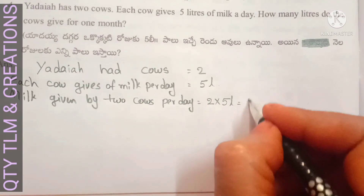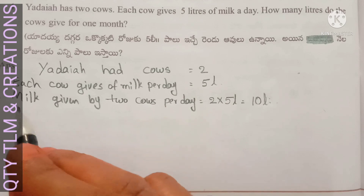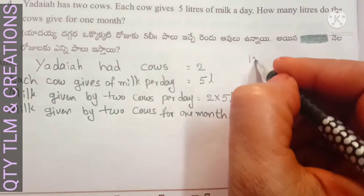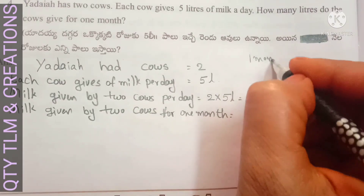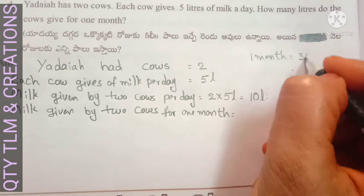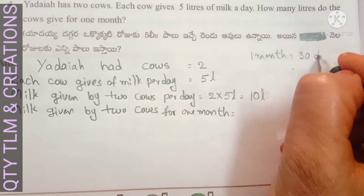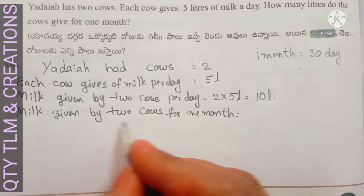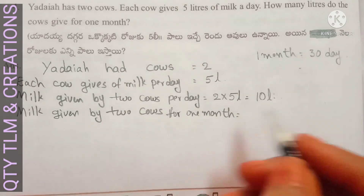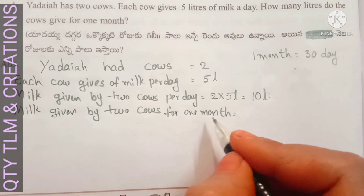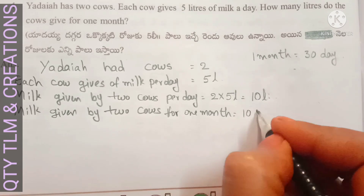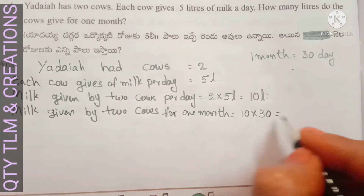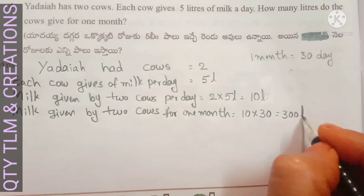Milk given by two cows for one month: one month equals 30 days. So milk given by two cows for one month equals 10 liters multiplied by 30 days, which is equal to 300 liters.